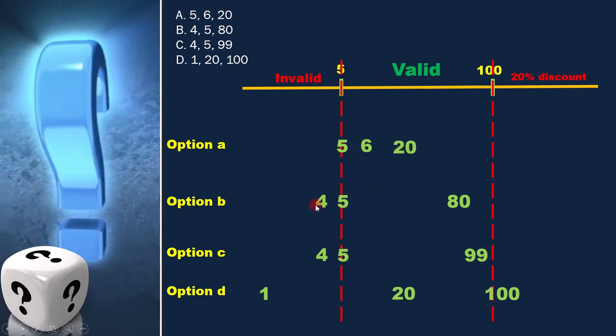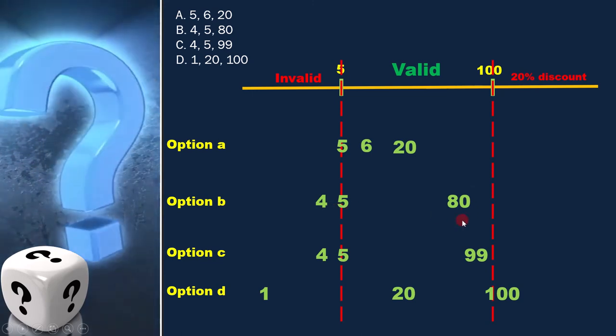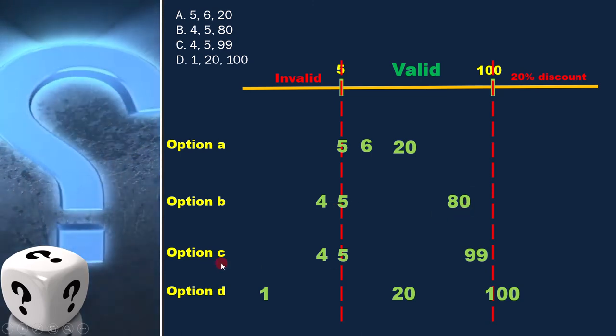In option B, 4 and 5 are at boundary but 80 is not at the boundary.